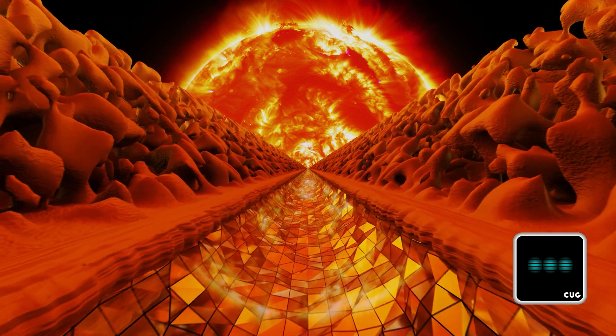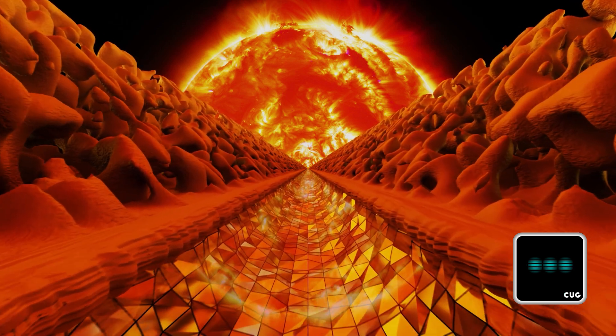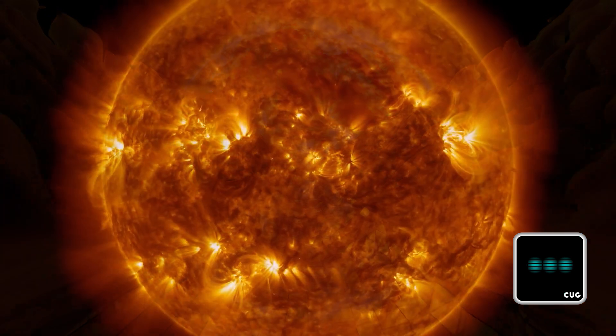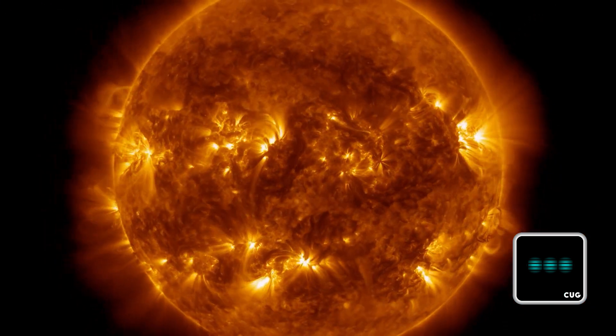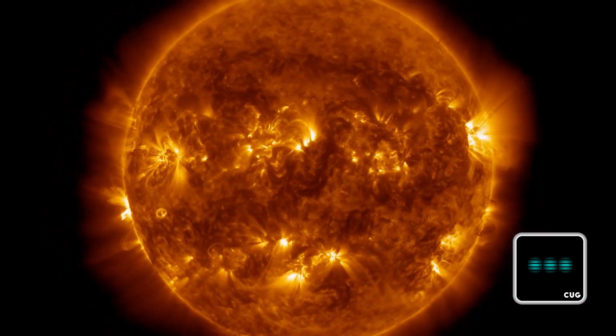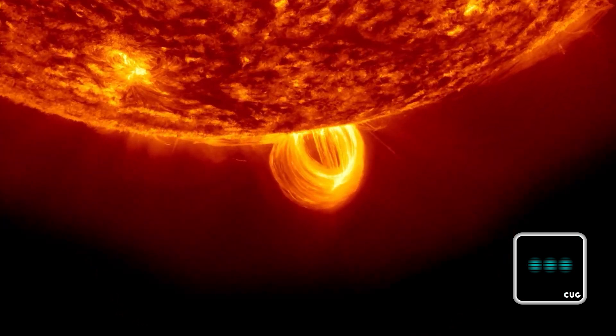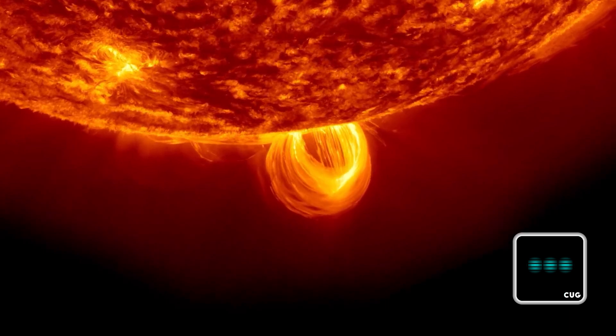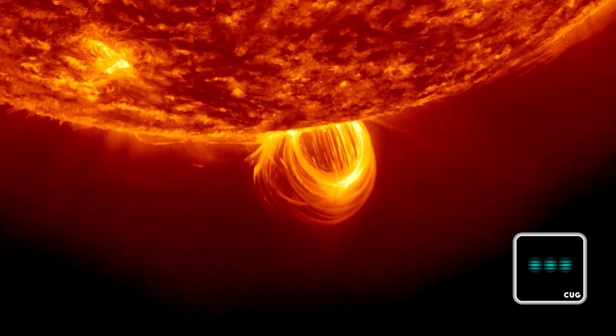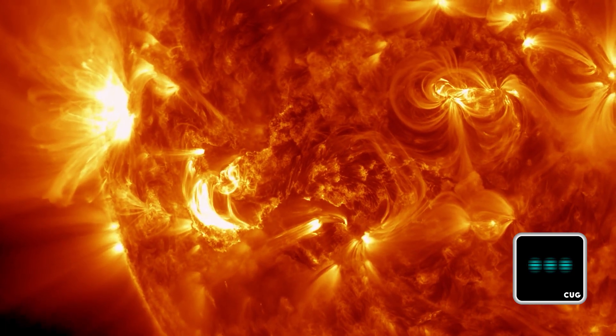I'm often asked how it's possible to record something like this, how space probes would get so close to the Sun in the first place. Well, you don't need to get that close to the Sun. The Sun appears as big as the moon in the sky, about the size of the tip of your little finger when your hand is stretched out.